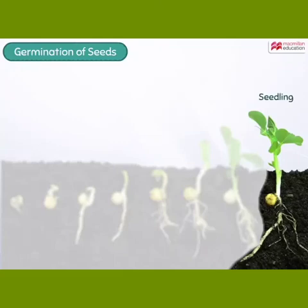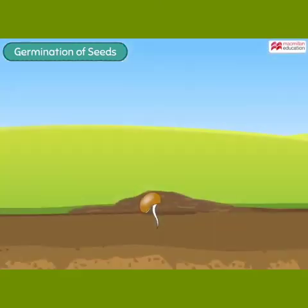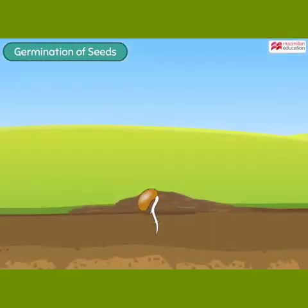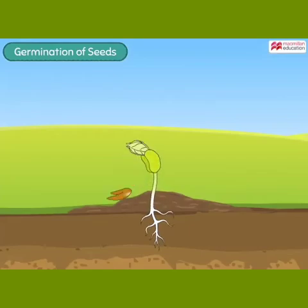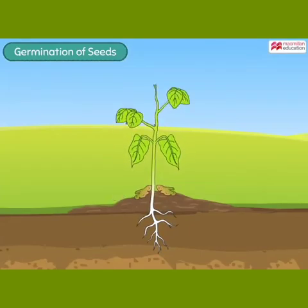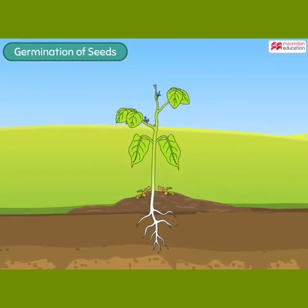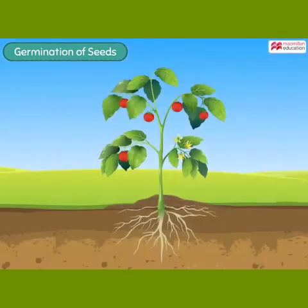This plant is now called a seedling. The cotyledons keep providing food to the seedling until the leaves formed start making food for the plant. Then there is no stopping — the plant keeps growing to give rise to flowers, fruits, and more seeds.